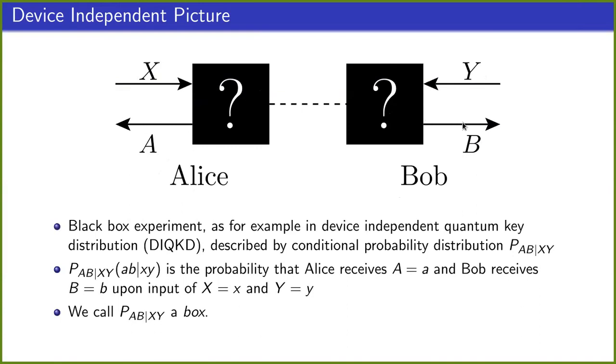Now we don't know how these black boxes might work internally, so all we can do is describe them by some conditional probability distribution of a and b conditioned on x and y. Because this conditional probability distribution describes a black box, we'll just call this P_abxy a box throughout the rest of the talk.